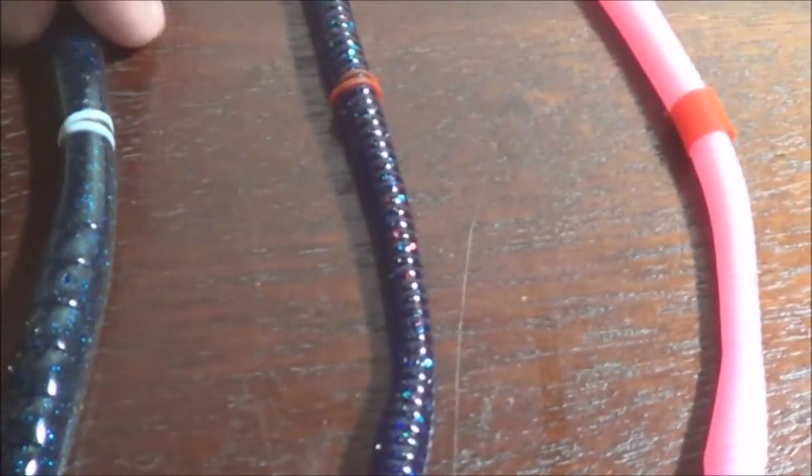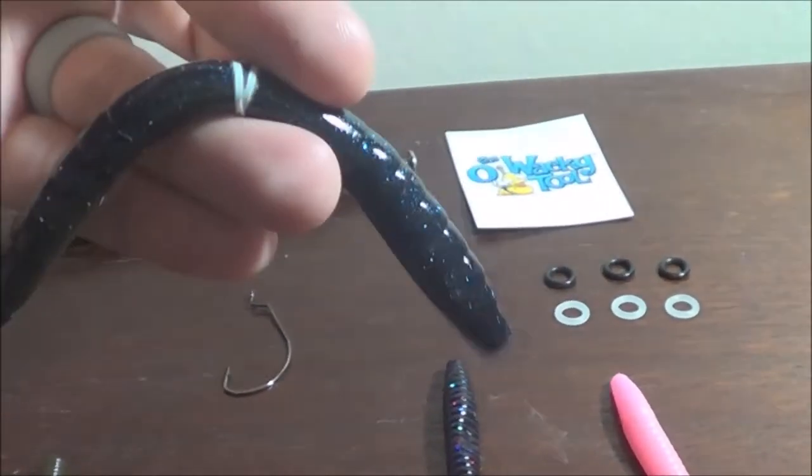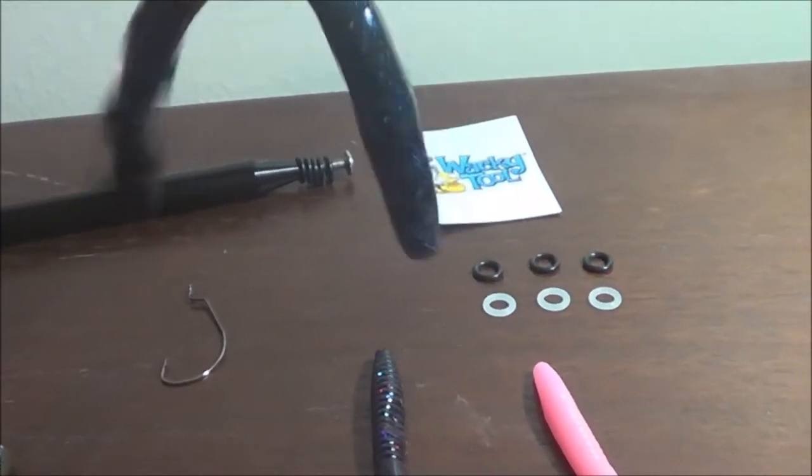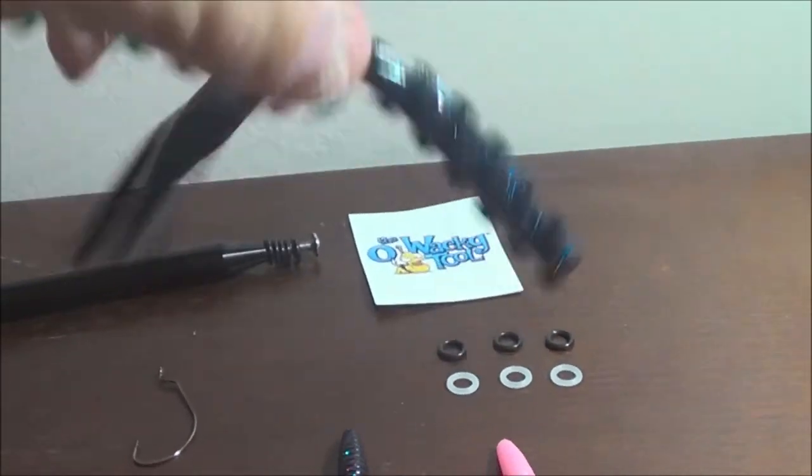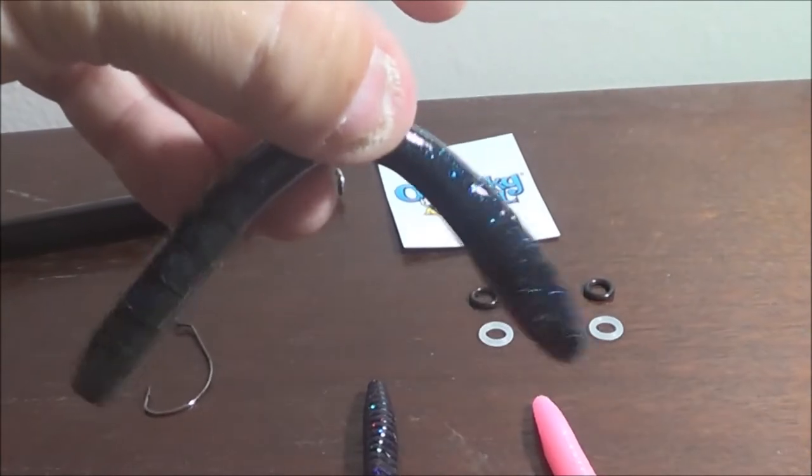For instance, this 48, I like this bait because it's thinner in the middle and thicker on the ends, so it has a lot more undulation for this bait.